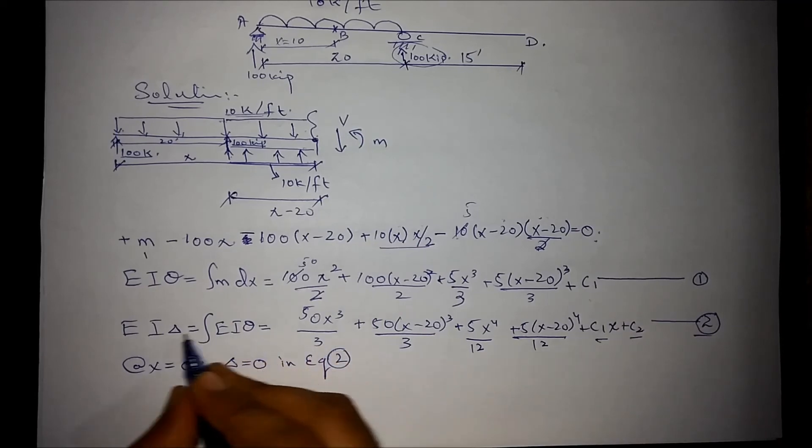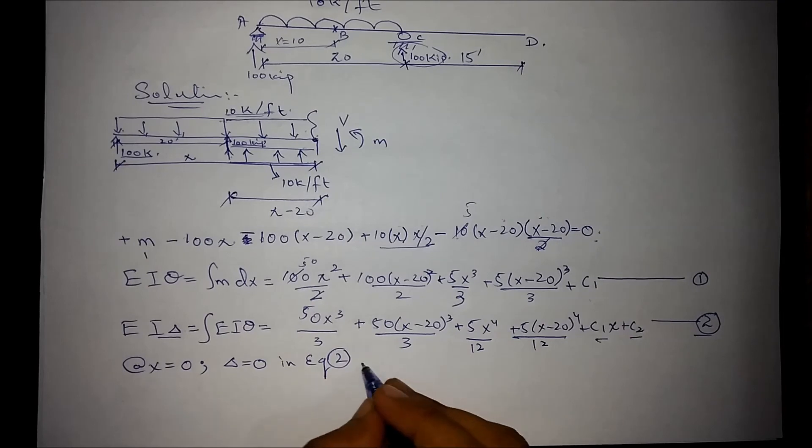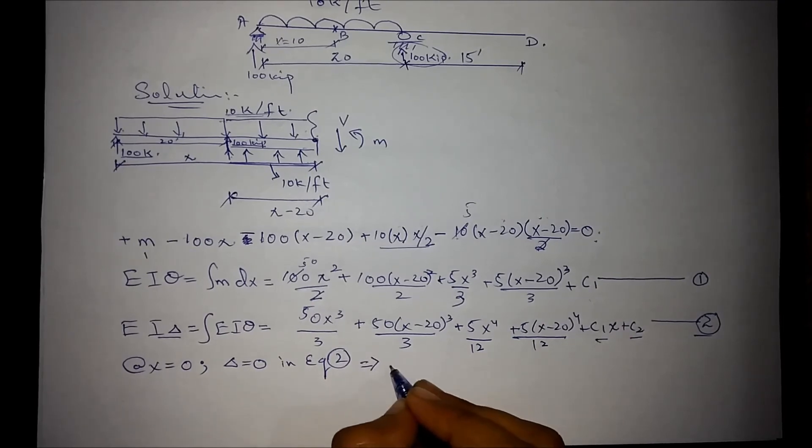In equation number 2, that is this equation, we put delta is equal to 0 and x is equal to 0. We get the value of c2 as 0.